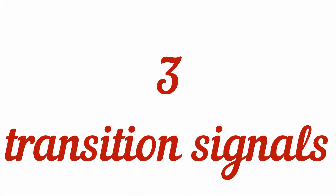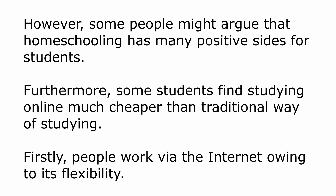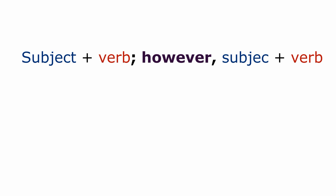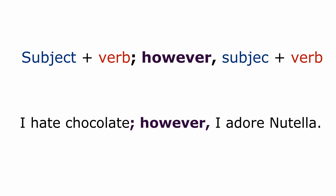Next, we need to place a comma when we write transition signals in a sentence. For example, we write them at the beginning: 'However, some people might argue that homeschooling has many positive sides for students.' 'Furthermore, some students find studying online much cheaper than the traditional way of studying.' 'Firstly, people work via the internet owing to its flexibility.' We will not discuss transition signals in detail in this video. However, remember that some transition signals might join two clauses or sentences. In this case, we should place a semicolon before the transition signal and a comma after it. This happens because transition signals are actually not conjunctions — that's why we join two sentences with a semicolon.